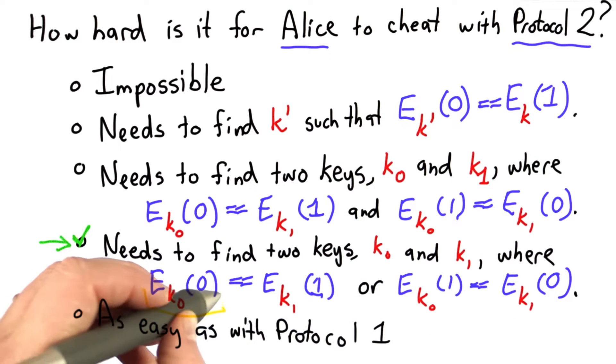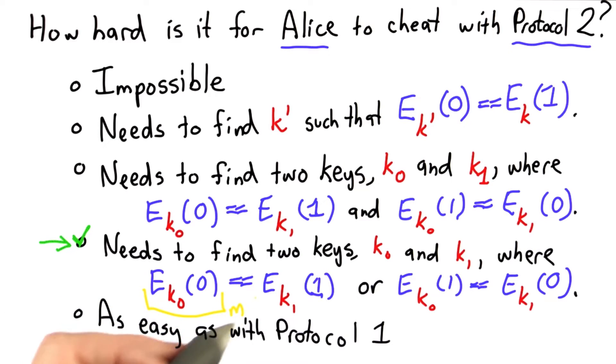So in this case, if she sends this as the message, if Bob guesses 0, she can win by revealing k1. If Bob guesses 1, she can win by revealing k0. So she's guaranteed to win.